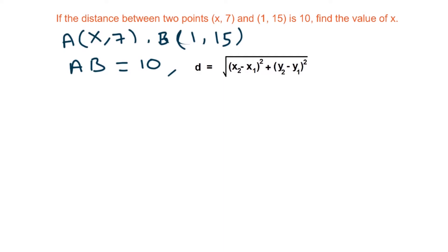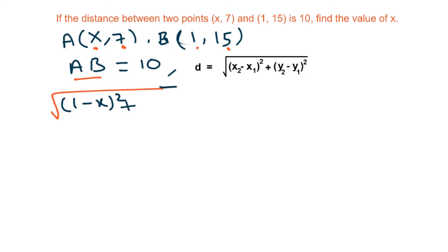Let us consider A as (x1, y1) and B as (x2, y2). So AB = square root of (1 minus x) whole square plus (15 minus 7) whole square, and this equals 10. Now we will square both sides to get rid of the square root.